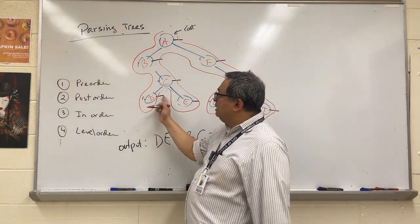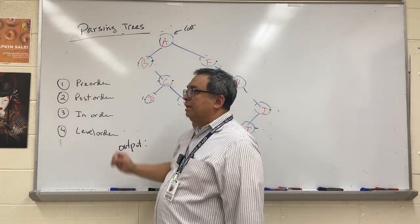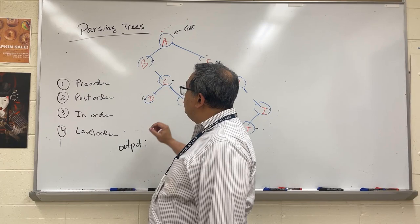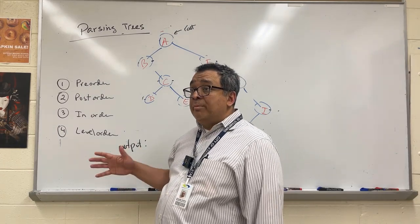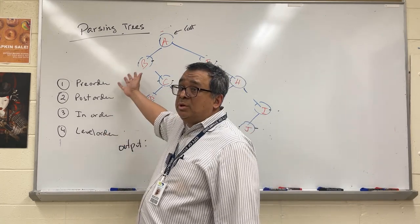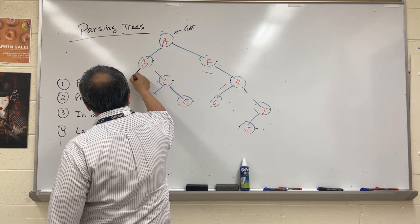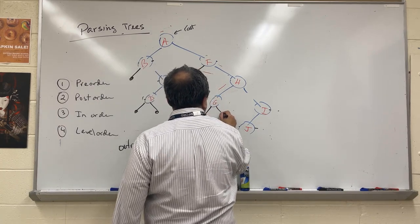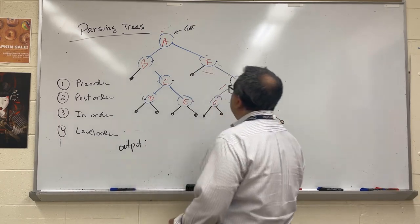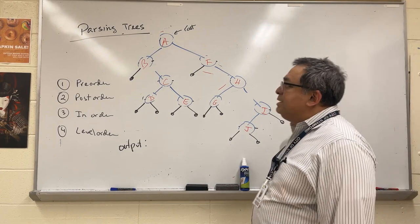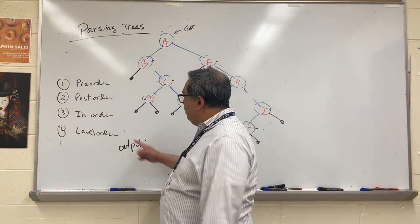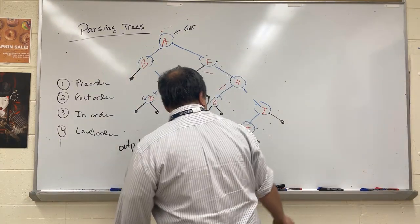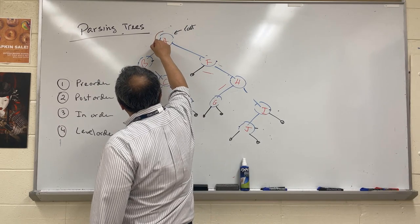For in-order it's a bit harder because we're going to print on the second visit. It's also easier to do if you draw in the null pointers. Drawing the nulls in: here's a null, here are two nulls, here are two nulls, here's a null, here are two nulls, here are two nulls, and here's one null. When we visit a node for the second time, we print it.